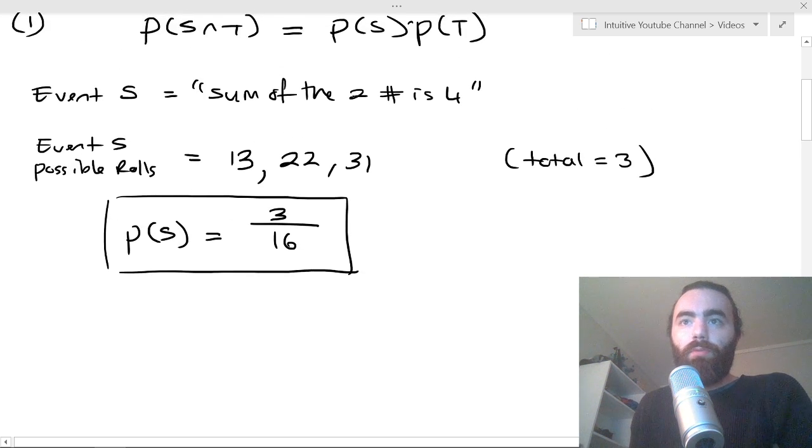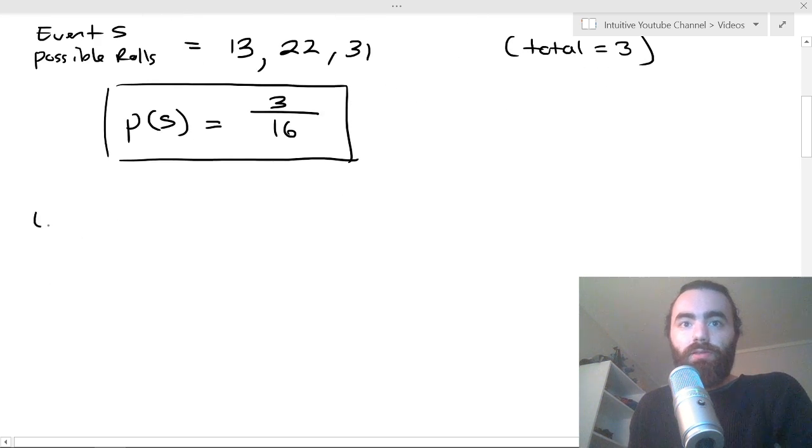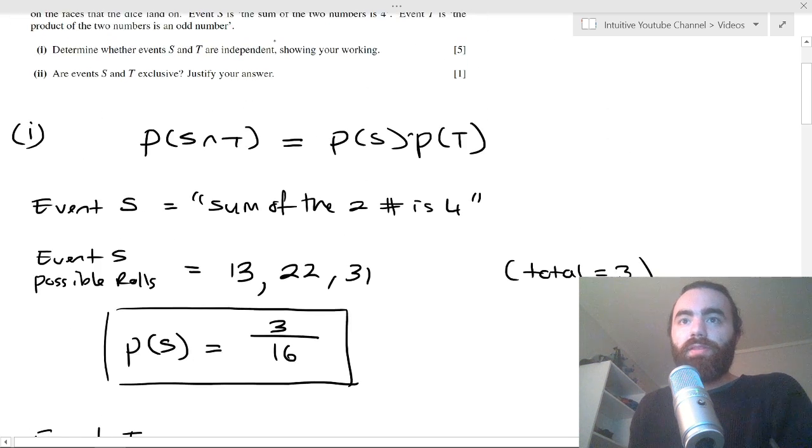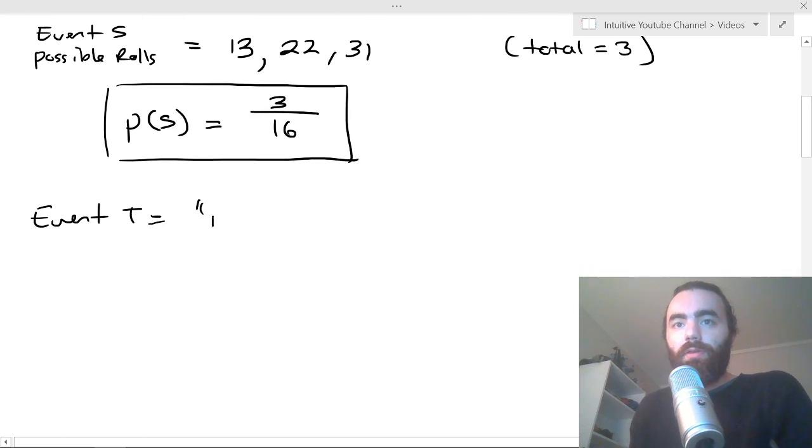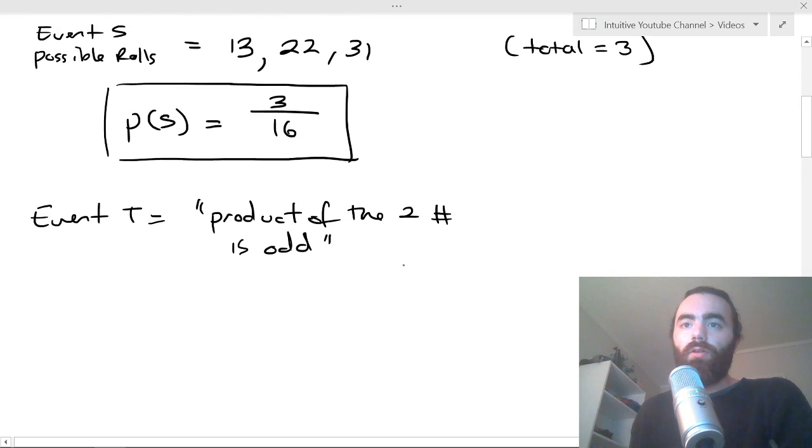And then we should find the probability of T. So let's look at event T. Event T is the product of the two numbers is an odd number. So this is product, and I always recommend writing it out, product of the two numbers is odd. So when we times the two rolls together, we get an odd number.